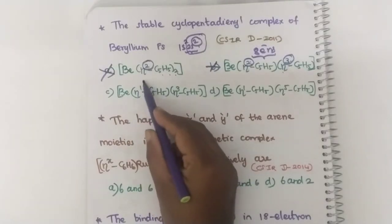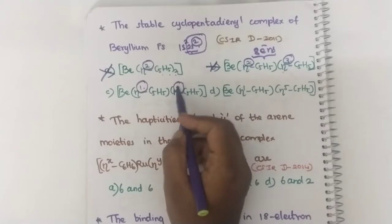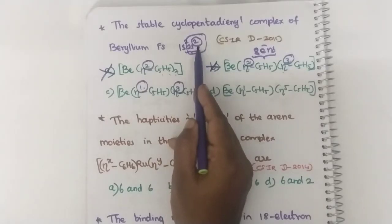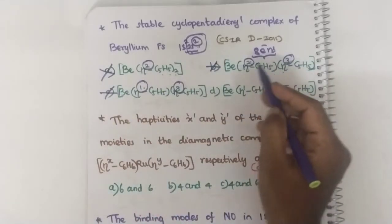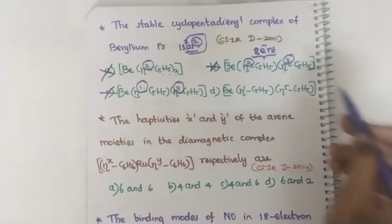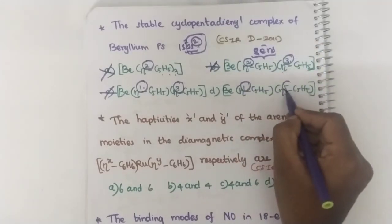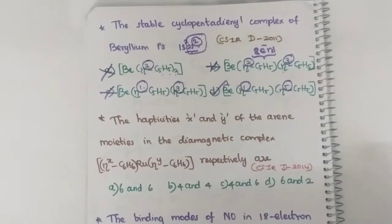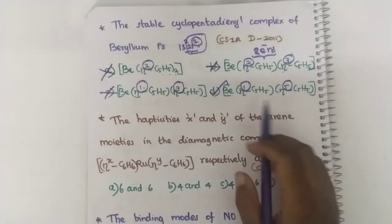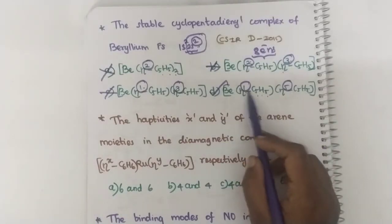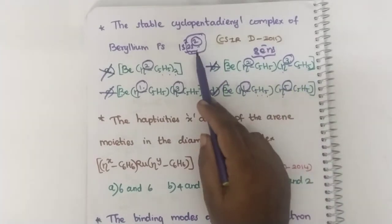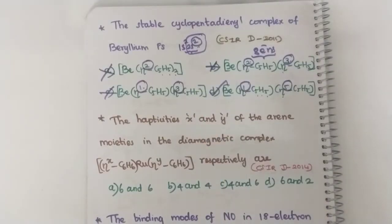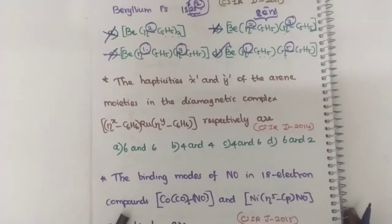In the correct case, it already has 2 electrons. Here it is eta¹ and eta⁵ — 1 + 5 = 6, plus 2 already = 8. Hence this is the right answer. If one C₅H₅ donates 1 electron and this C₅H₅ donates 5 electrons, totally 6 electrons. Already it has 2 electrons, so it will now have 8 electrons. Hence this will be the stable complex.